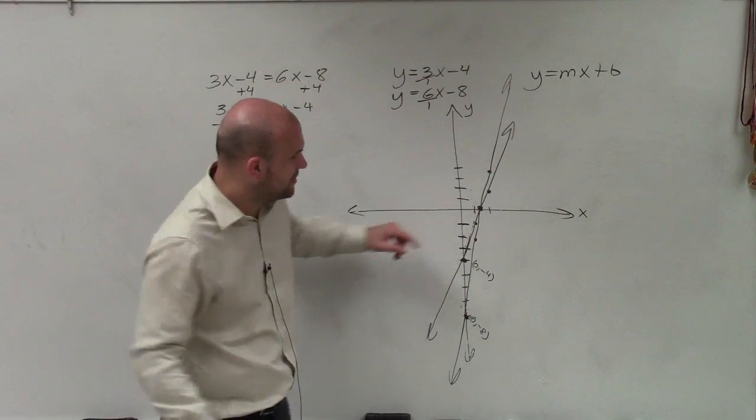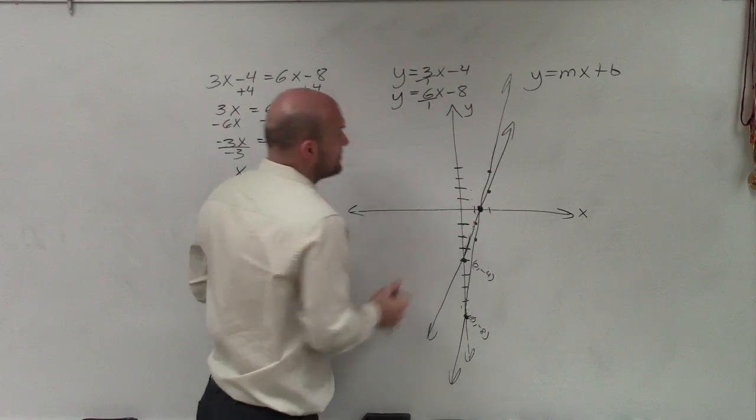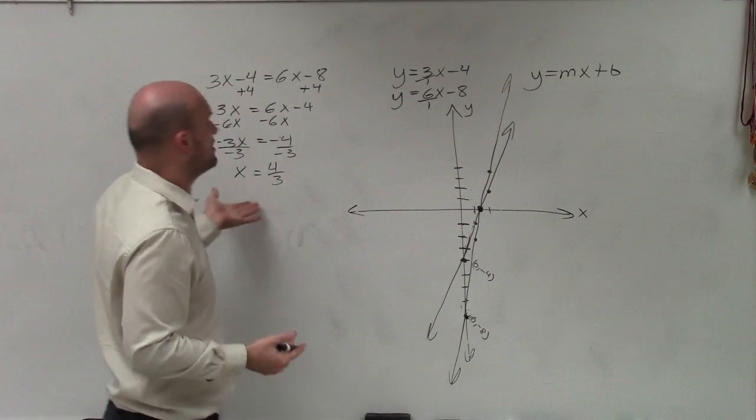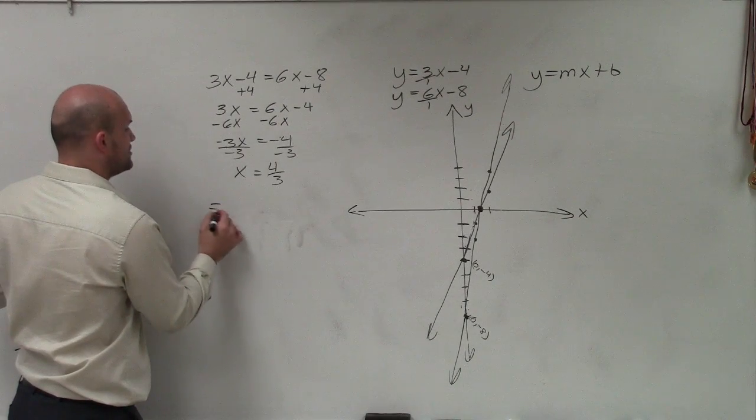Therefore, at 4 thirds, you can see that these both are going to intersect each other. Now what I want to do is just verify that 4 thirds is also going to make these set equal to the same value.